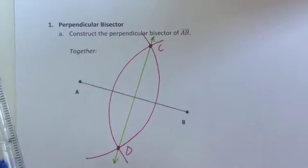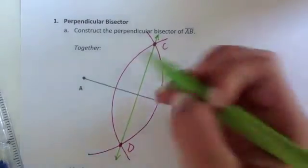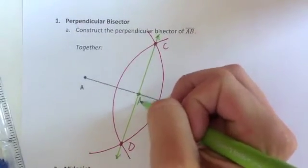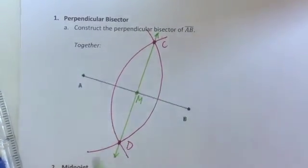Now with this construction we can make two very important conclusions. The first one being that I know I have a midpoint. We'll call it M. The midpoint represents the point on which the segment itself is cut in half.